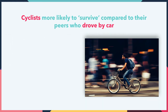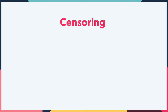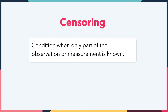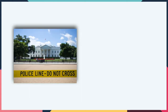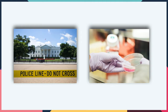However, in the previous instalment, I omitted an important feature of the analysis — that is, the notion of censoring. Strictly speaking, censoring is a condition when only part of the observation or measurement is known. That is, the ability to take into account missing data whereby the time to event is not observed. For example, the death in office of a president, or someone leaving a medical study before the study formally concludes.